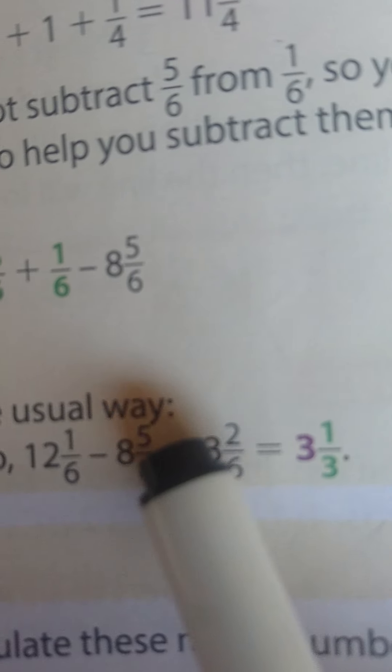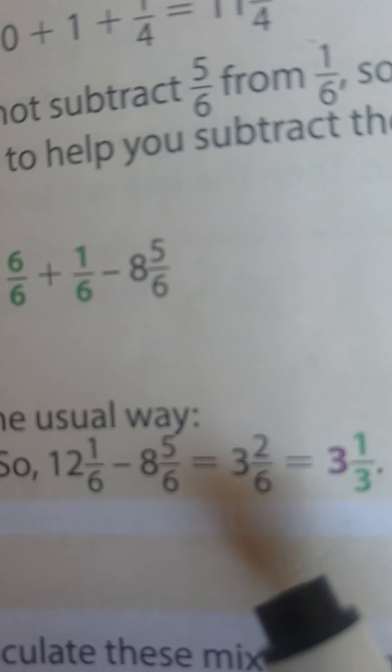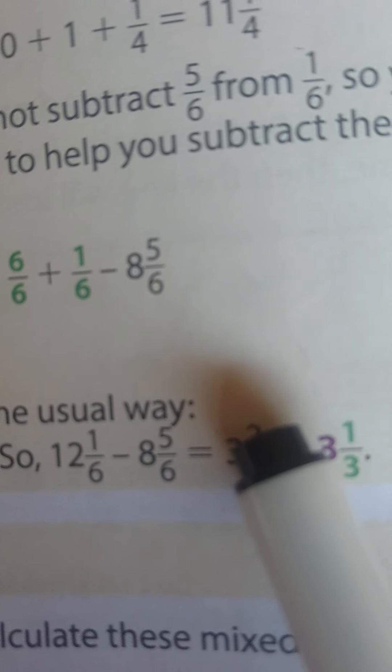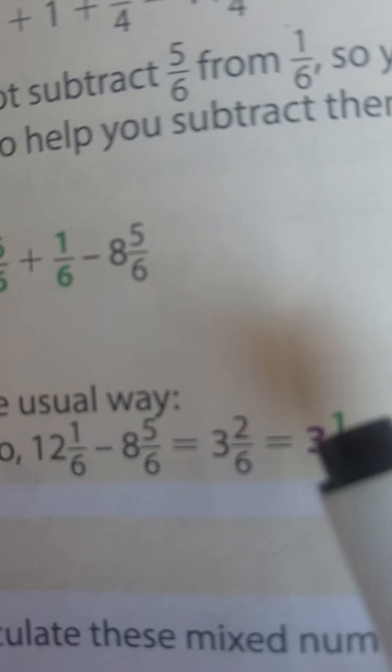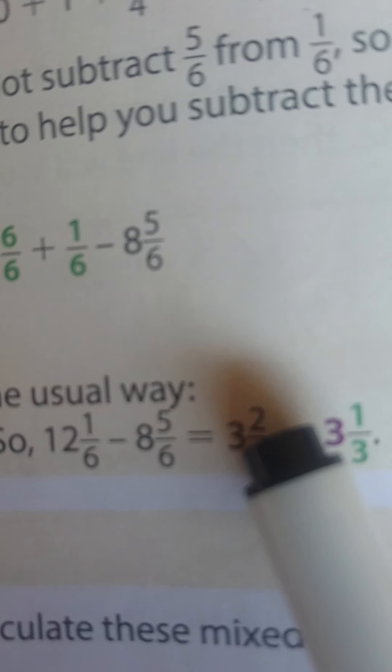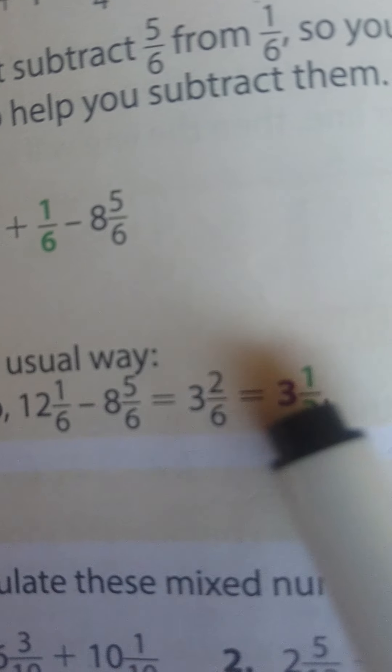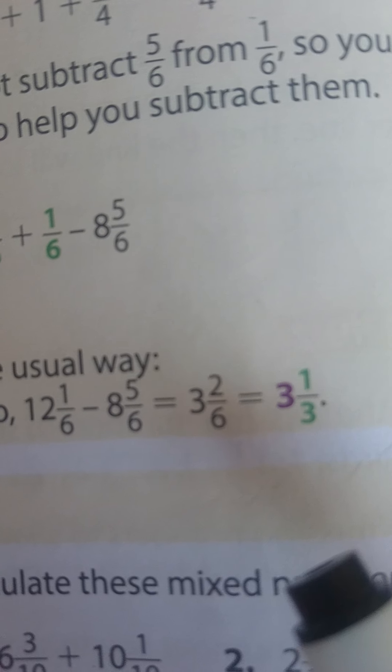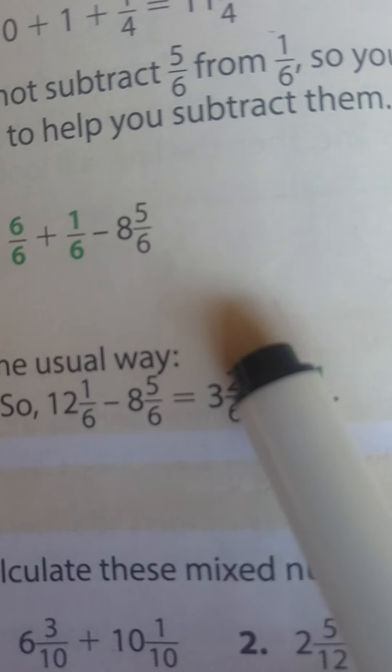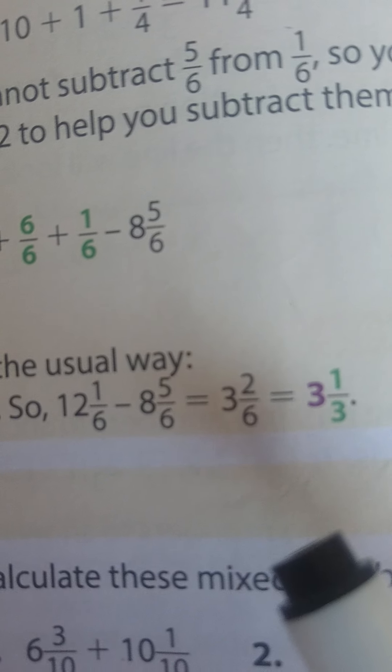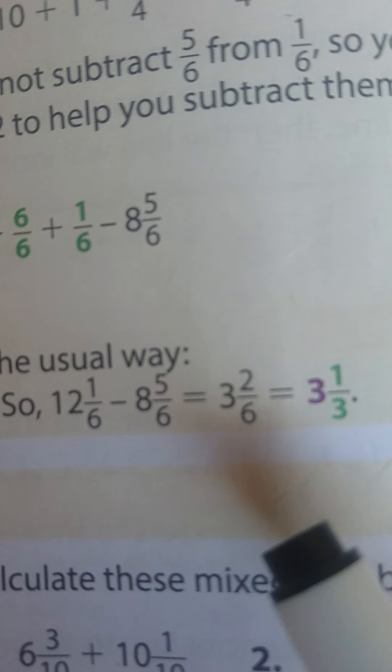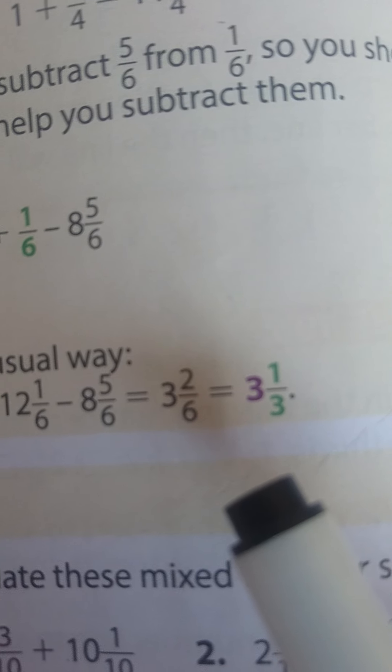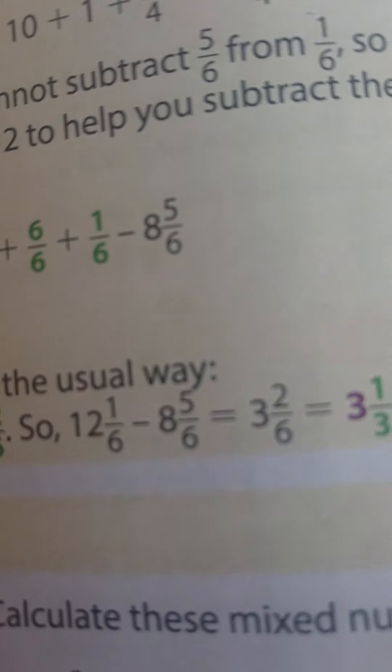But you can also write this ²⁄₆ in its simplest form. You will say, how many times can 2 go into 2? It is once. And how many times can 2 go into 6? It is 3 times. This is when we write fractions in its most simplest form. Whatever you do to the numerator must be done to the denominator as well. If you need extra help with this, let me know and I'll help you. Assalamualaikum.